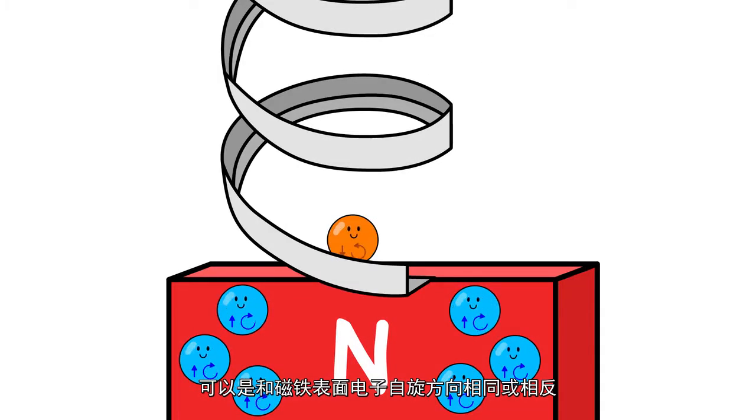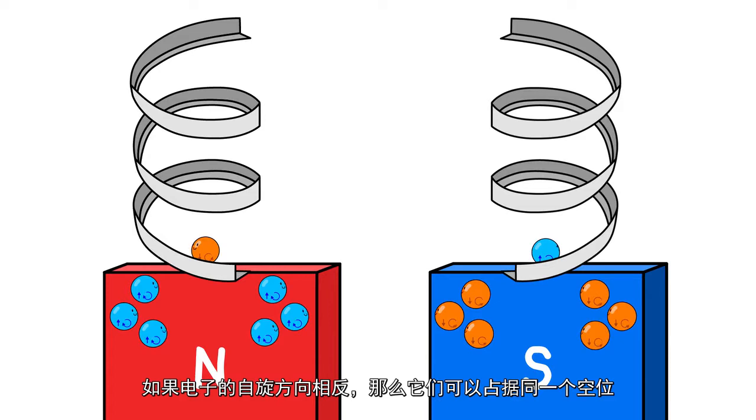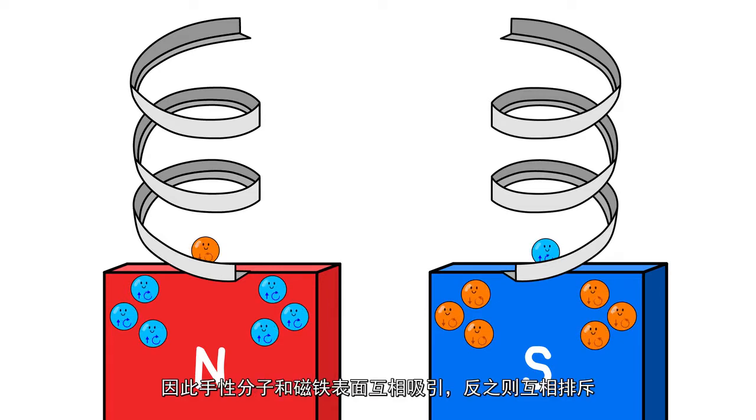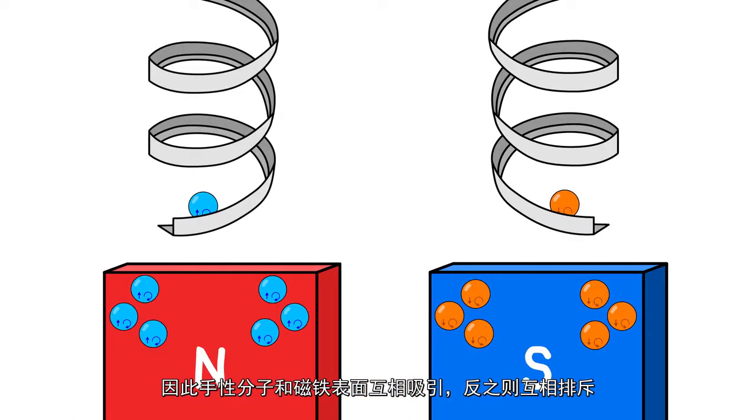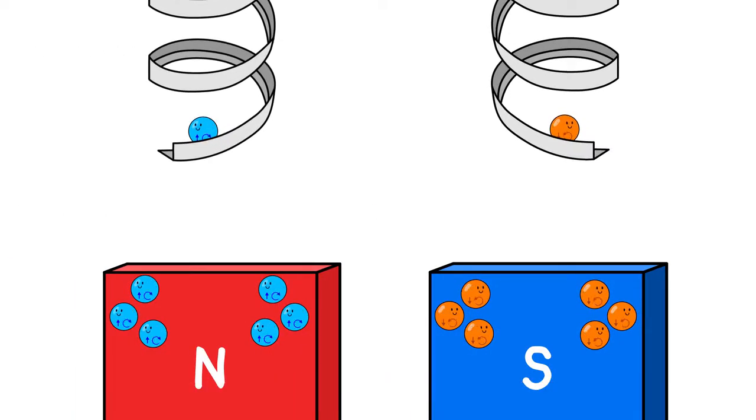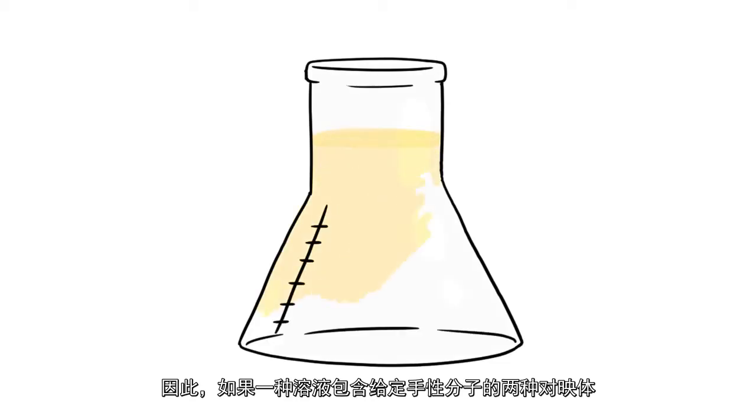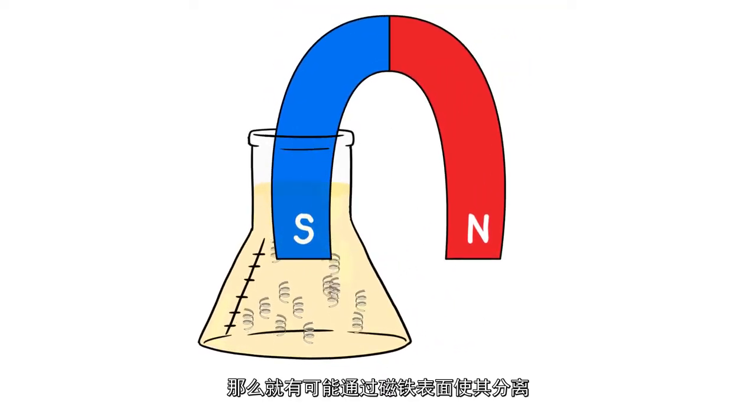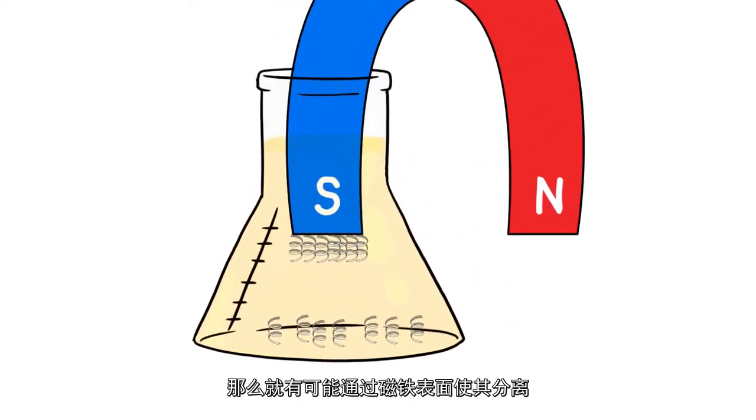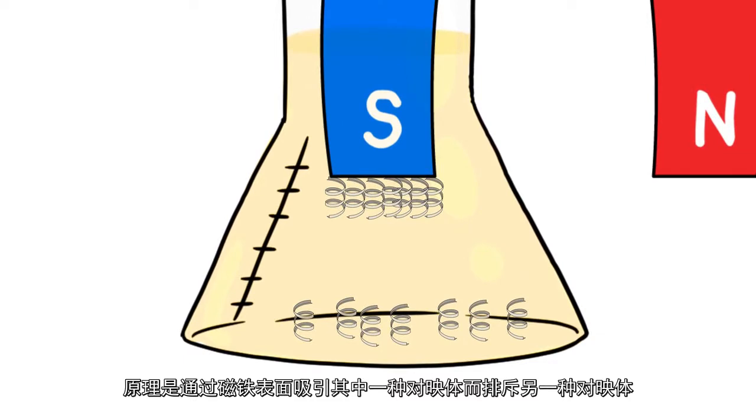If the spins are opposite, they can occupy the same volume and therefore the molecule and the surface attract each other. If they are the same, they would repel each other. Hence, if a solution contains both enantiomers of a given chiral molecule, it is possible to separate the enantiomers by magnetic surface that attracts one and repels the other.